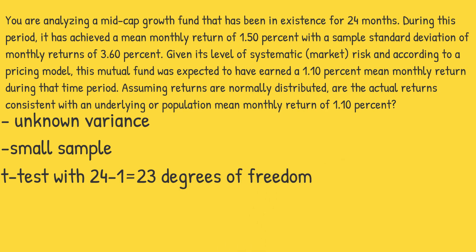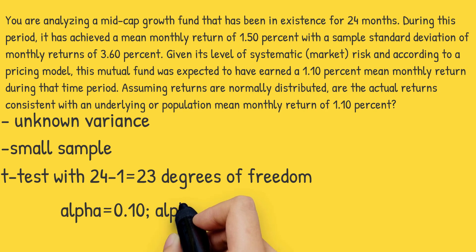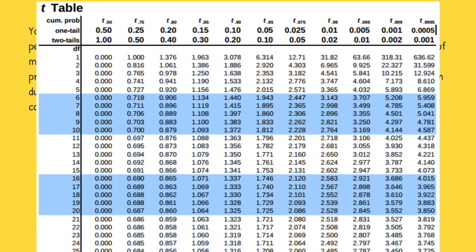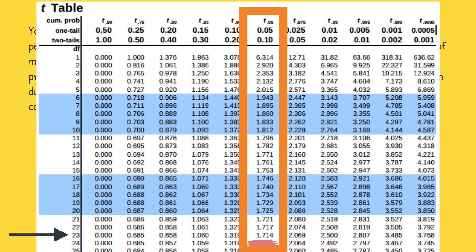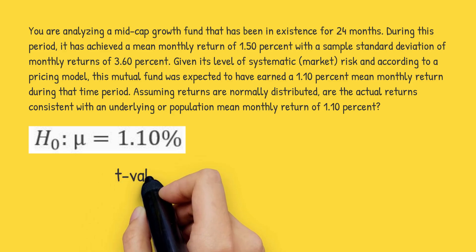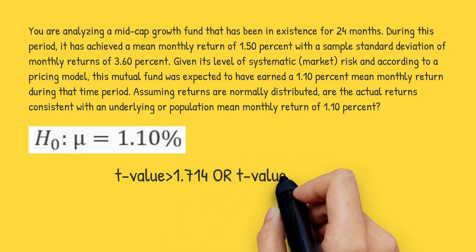Now let's find our rejection points or critical values. Because this is a two-tailed test, we divide alpha — the level of significance, which is 10% or 0.1 — into two tails, giving alpha/2 = 0.05. We look across the row for 23 degrees of freedom in the t-distribution table to the 0.05 column to find 1.714. Hence, the two rejection points for the two-tailed test are +1.714 and −1.714. We will reject the null hypothesis if the calculated t-value is either greater than 1.714 or less than −1.714.